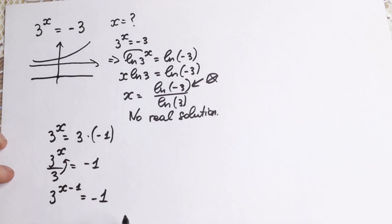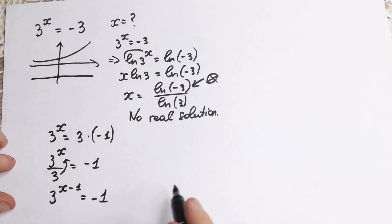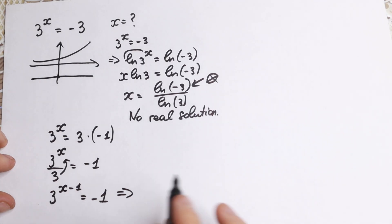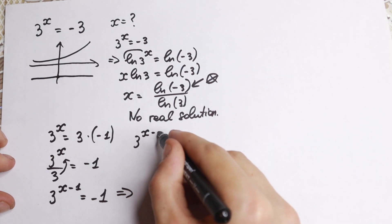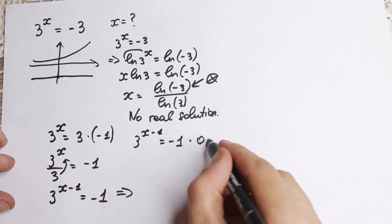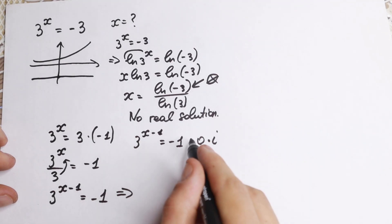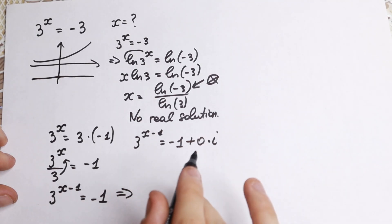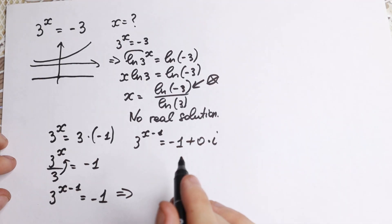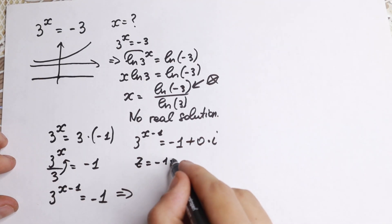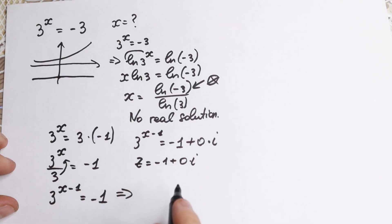We have this expression — and why is it useful? Now I want to write it in Euler's form, because every number can be written in another way using a complex number. So we can write 3 to the power x minus 1 as minus 1 plus 0 times i. Since 0 times i equals 0, this gives us z equal to minus 1 plus 0i. Now we need to know about Euler's form.